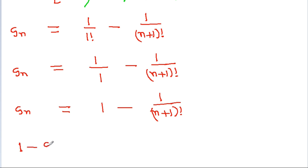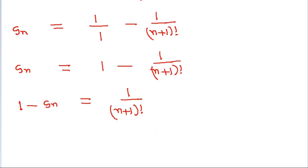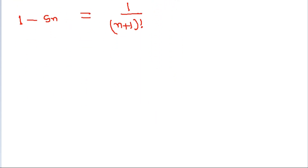Therefore, 1 minus Sn equals 1/(n+1) factorial.